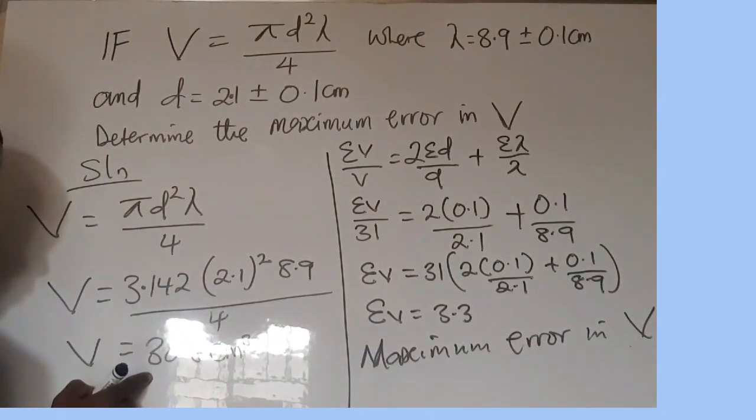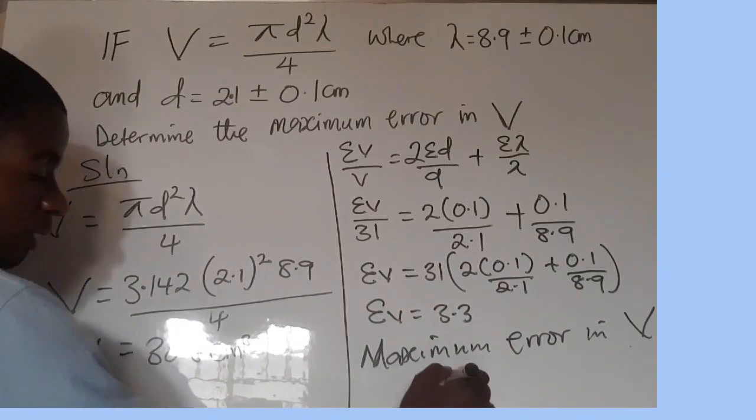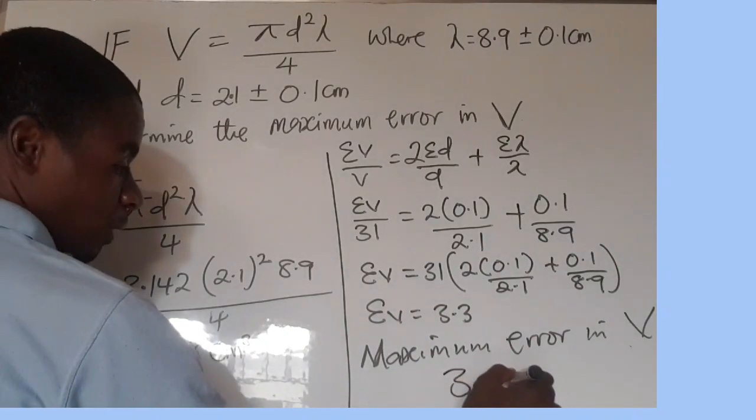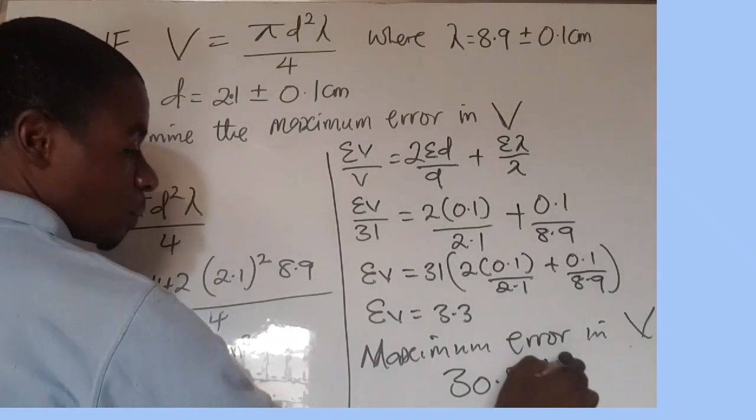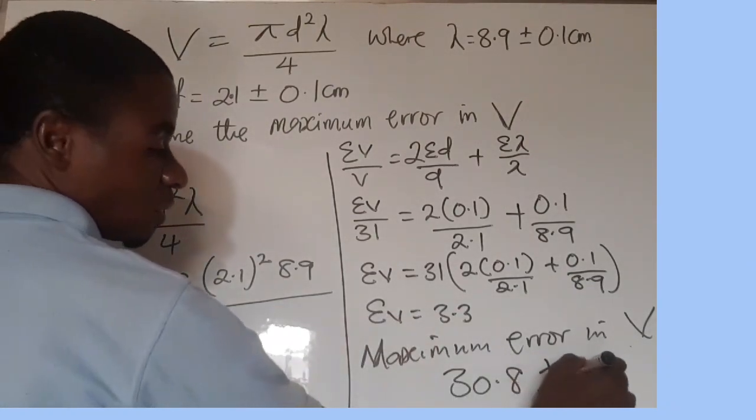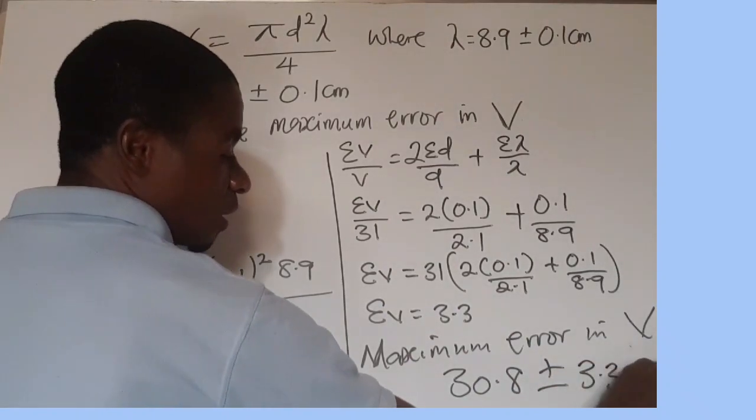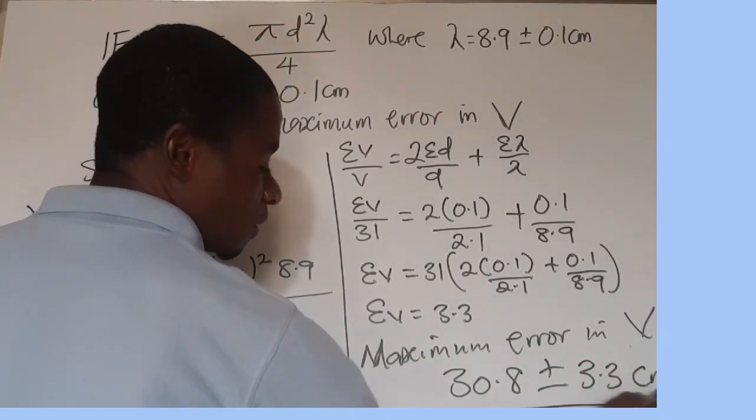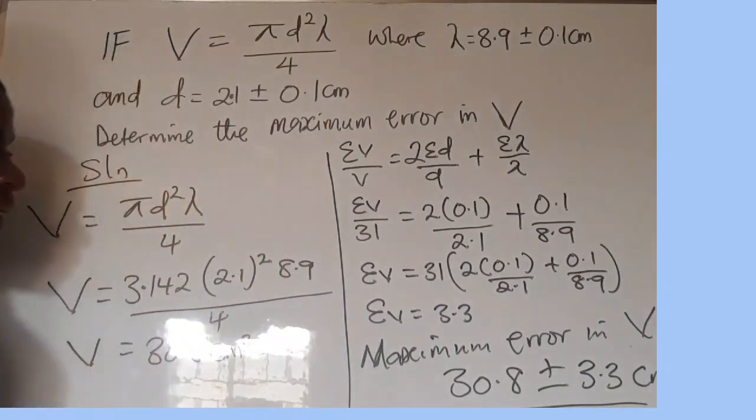The first value you obtain, that is the V, you write it, which is 30.8, then plus or minus, then the error is 3.3 cm³. And that is it, this is our final answer.